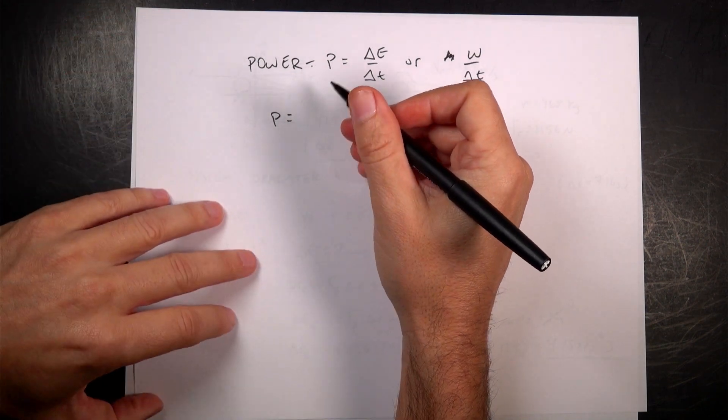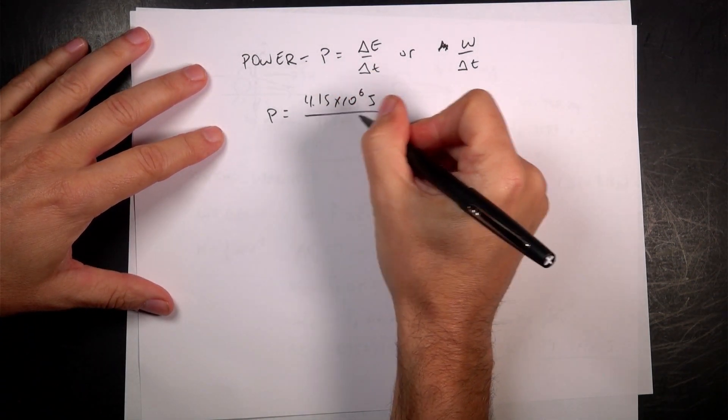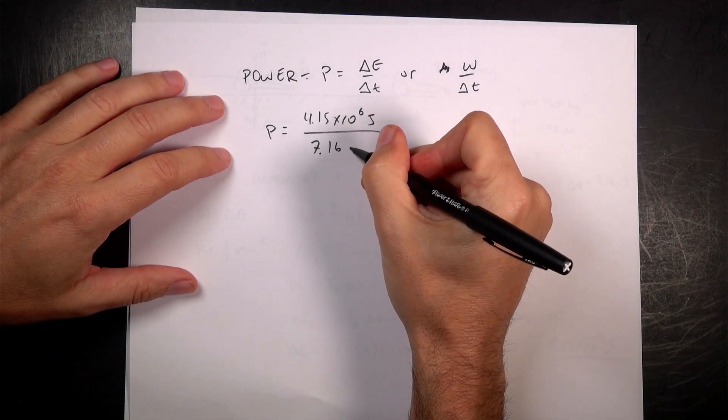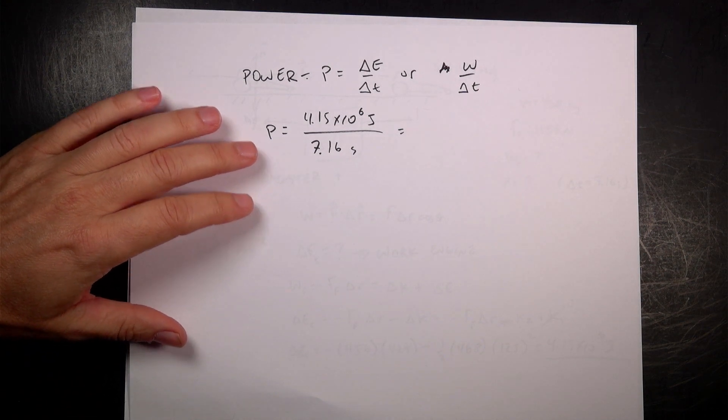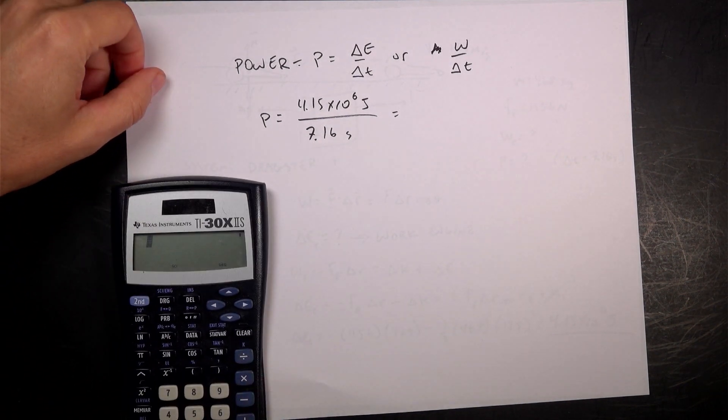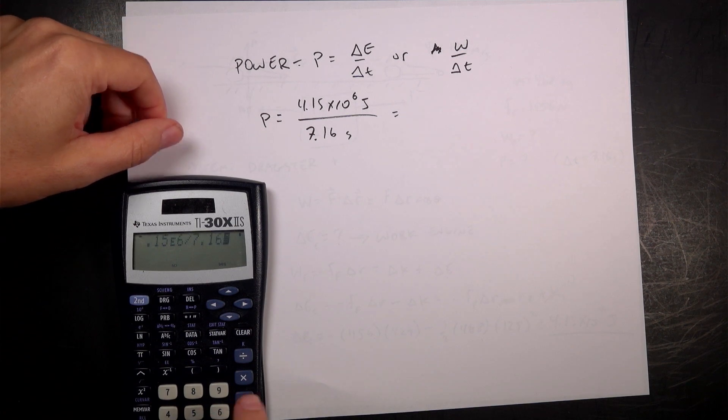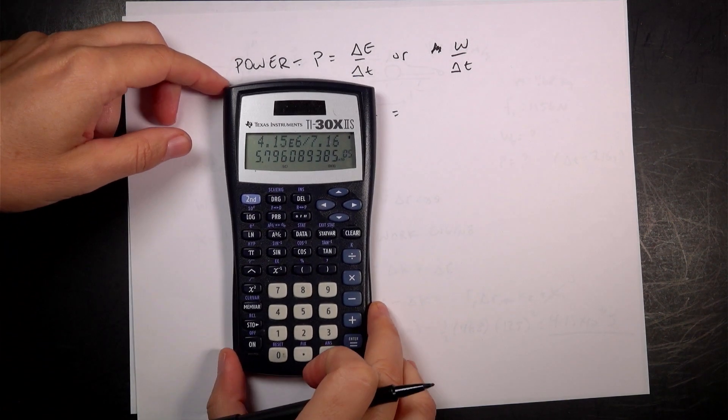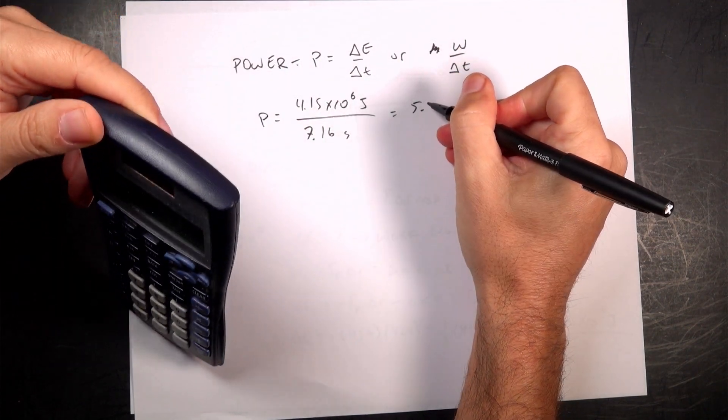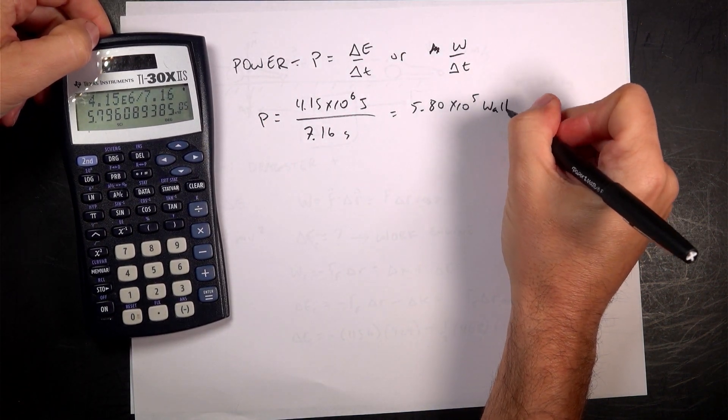Power is going to be 4.15 times 10 to the 6th joules over 7.16 seconds. Okay, so that will give me the power in watts. So I'm going to calculate that. 4.15 times 10 to the 6th divided by 7.16. Did I get that right? It's hard to see. And that gives me 5.80 times 10 to the 5th watts.